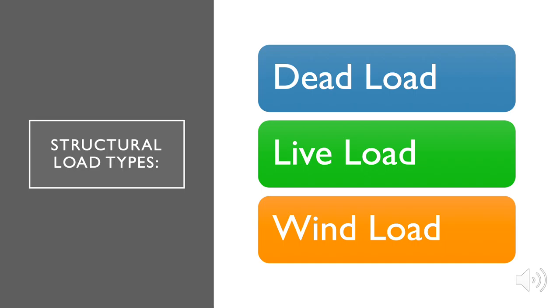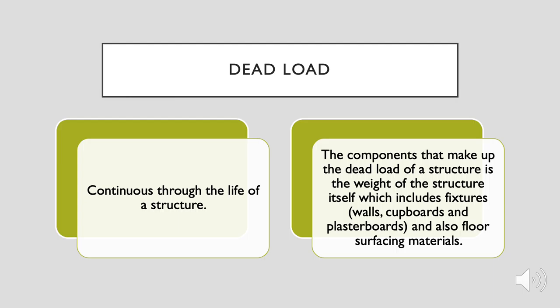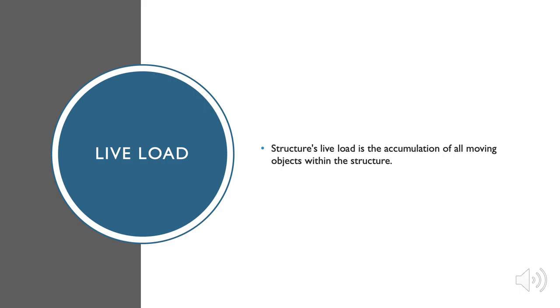Structural load types in construction are dead load, live load, and wind load. The dead load of a structure is continuous throughout the life of the structure, and the roof is considered part of the dead load. The components that make up the dead load include the weight of the structure itself — fixtures, walls, cupboards, plasterboards, and floor surfacing materials. Materials are only considered part of the dead load when fixed in a permanent position. The dead load can be exactly calculated from the known weights and dimensions of the materials used.